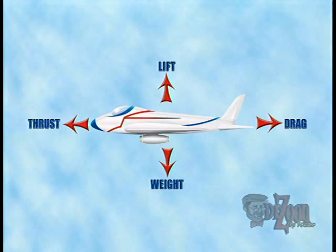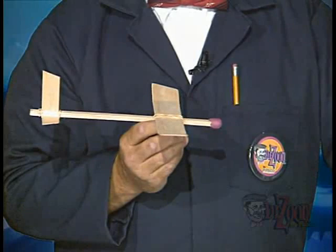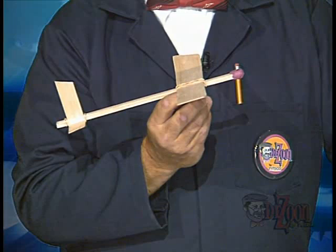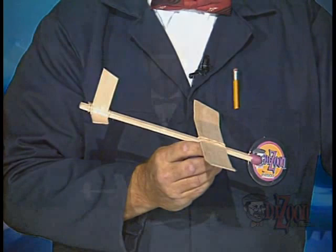The last force acting on an airplane is drag. Drag is a resistance of the plane to forward motion. The friction of the airplane moving through the air produces drag. For an airplane to be in level flight, these forces must be balanced. If the lift is more than the weight, the airplane will begin to climb or move upward. If the weight is more than the lift, then the airplane will begin to descend or move downward.